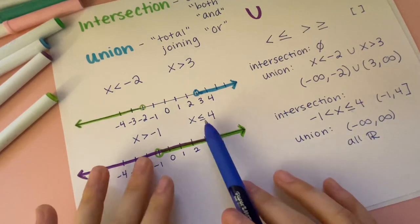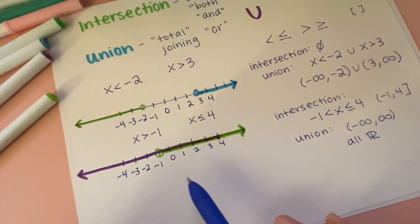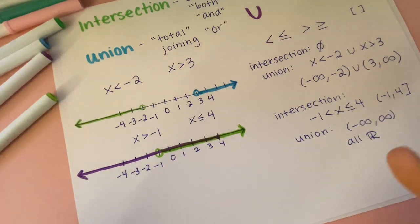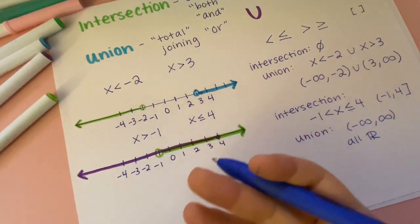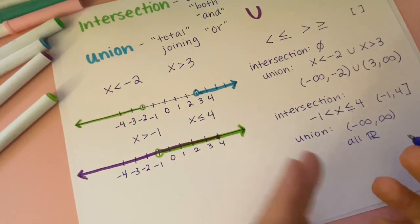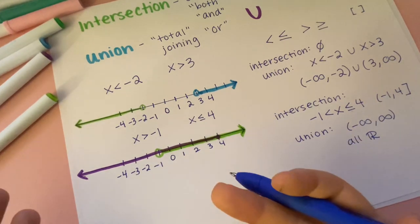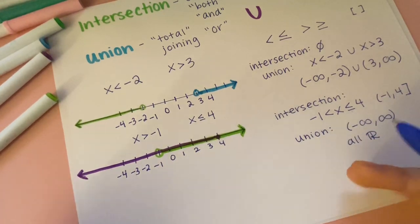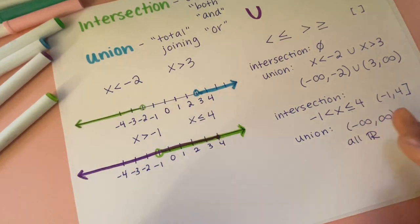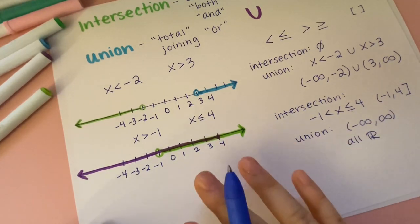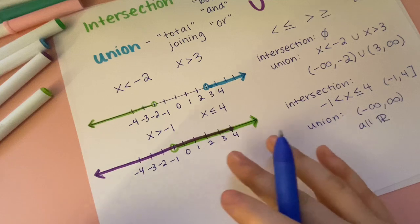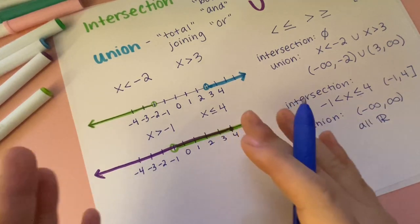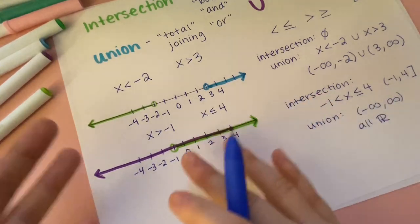The union is this set that represents the joining of the two — if some element satisfies either one, it belongs in the union. And if it satisfies both, it's still just a yes. This is different from probability, where you worry about double counting, but for sets and intervals, it doesn't matter. Yes means it's in this or this.